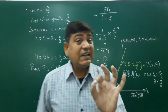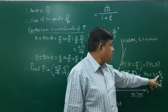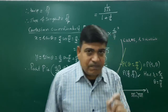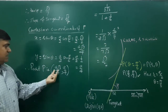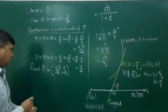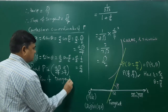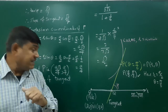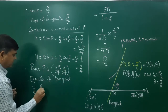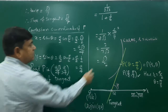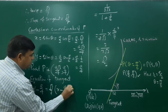We know the polar coordinates of P: r = a/2, θ = π/6, giving Cartesian coordinates (a√3/4, a/4). Using the one-point formula for the equation of the tangent: y − (a/4) = (√3/7)·(x − a√3/4).